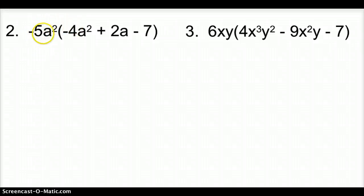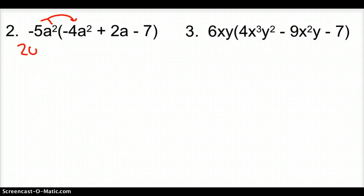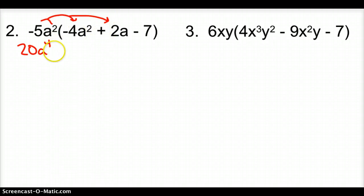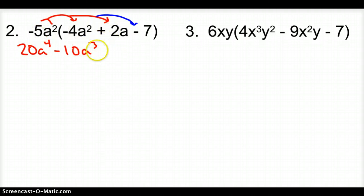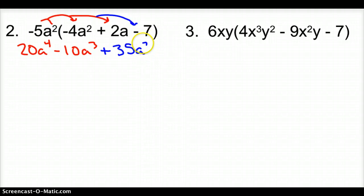Let's try another example. I'm going to take negative 5a squared and multiply it times each term. A negative times a negative makes a positive 20a to the — we have to add the exponents when we multiply. Now taking it times the next term: negative 5 times 2 is negative 10, a squared times a is a cubed. And finally, taking it times negative 7 — a negative times a negative is a positive — 5 times 7 is 35, and we still have a squared.